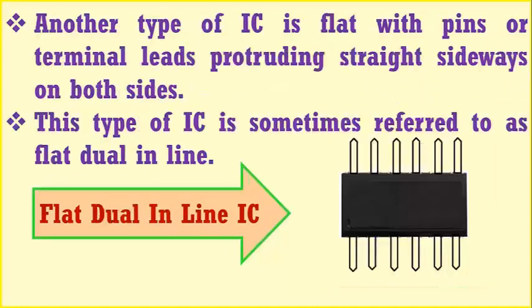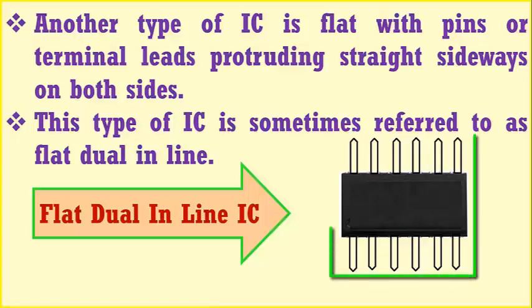Another type of IC is flat with pins or terminal leads protruding straight sideways on both sides. This type of IC is sometimes referred to as flat dual inline.